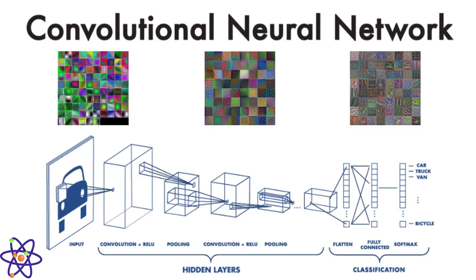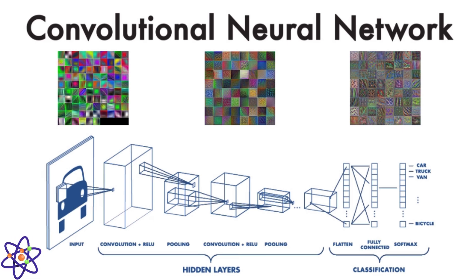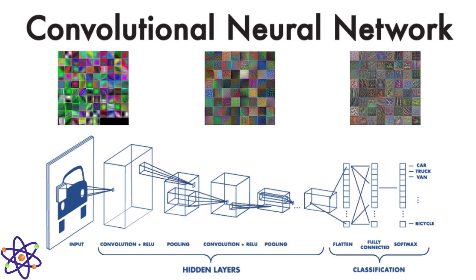CNNs, or convolutional neural networks, are a specialized neural network designed for processing grid-like data such as images. They use convolutional layers to automatically and adaptively learn spatial hierarchies of features. CNNs revolutionized computer vision tasks by capturing local patterns through convolutional operations and are widely used in image recognition, object detection, and other visual data tasks.